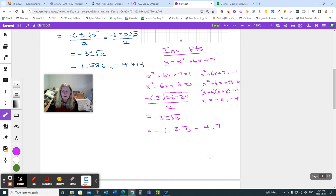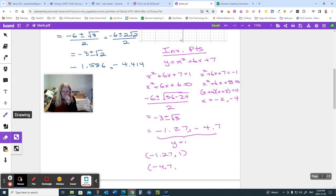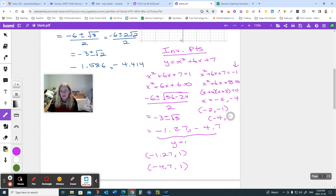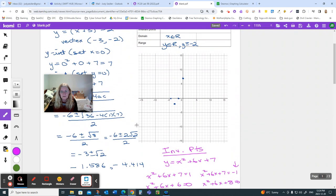So these two came from when y is 1. So these are the points negative 1.271 and negative 4.71. These came from when y was negative 1. So these are negative 2, negative 1, and negative 4, negative 1. They're the four points that you would list in here. Those are your invariant points, because those are on both graphs.